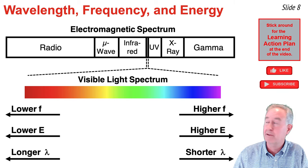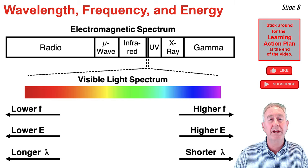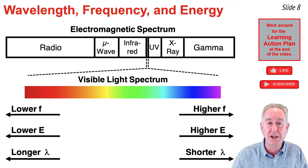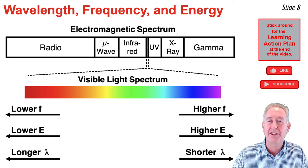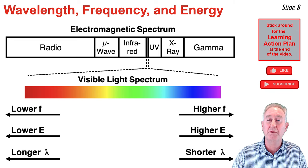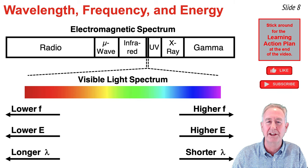As you progress from the radio wave region over to the gamma ray region, the wavelength gradually decreases and the frequency and energy values increase. The gamma ray region of the EM spectrum consists of waves with the highest frequency and energy and the shortest wavelengths.